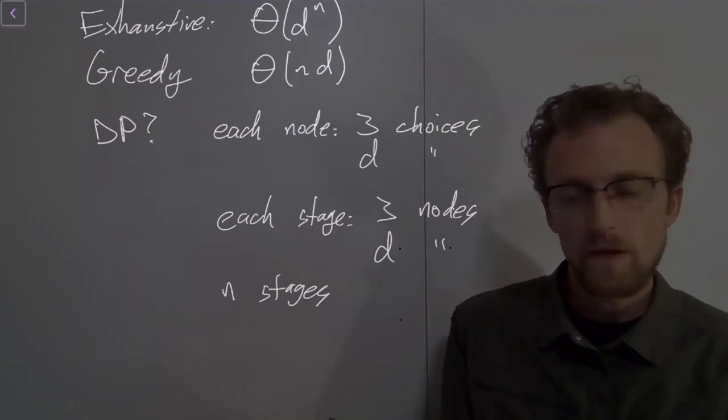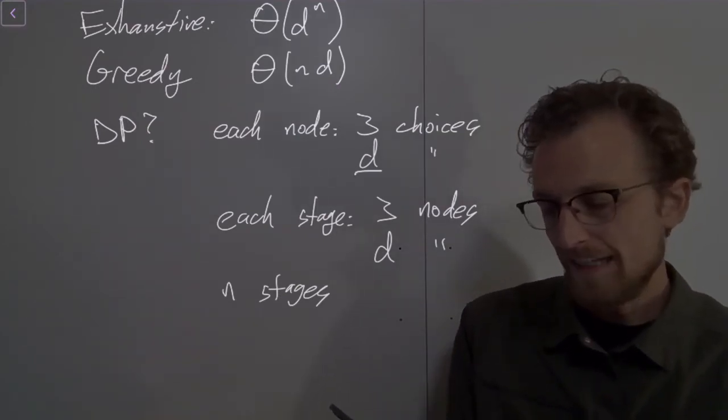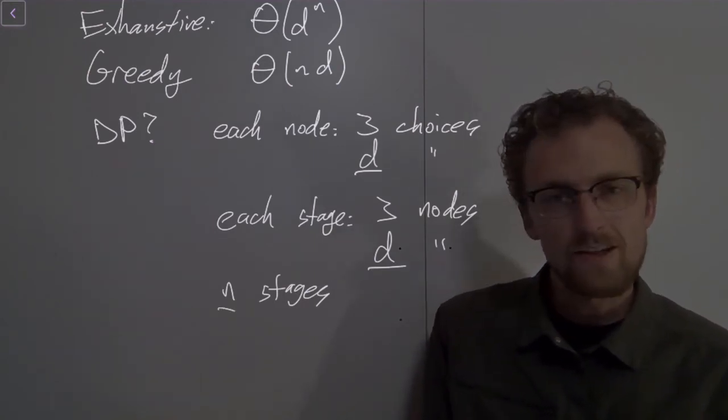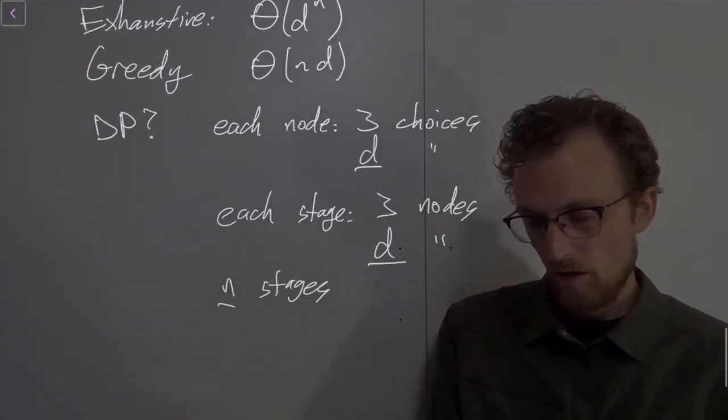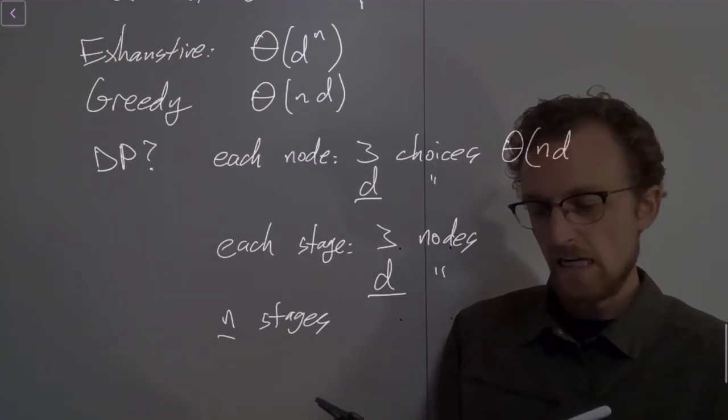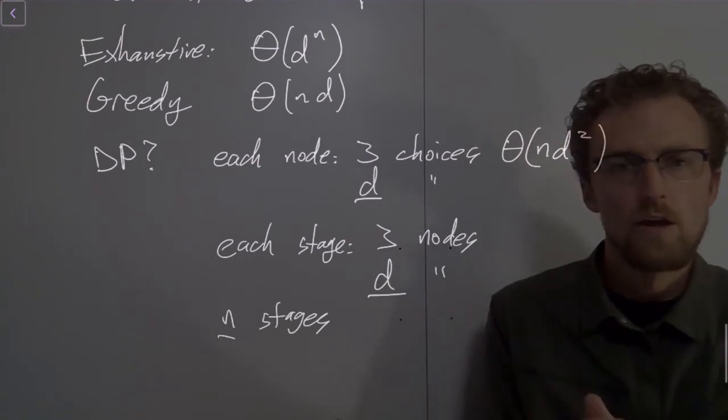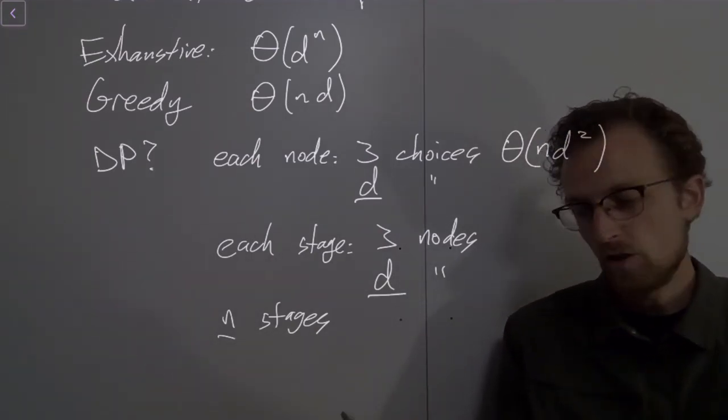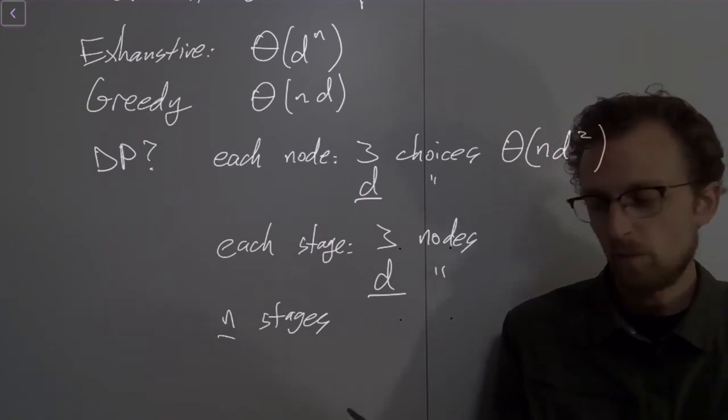So how many decisions do we have to make altogether? Well, d times d per stage times n stages. So in total, we end up with a big theta of n times d squared, where d squared is the total number of choices we have to make per stage, and there's n stages.